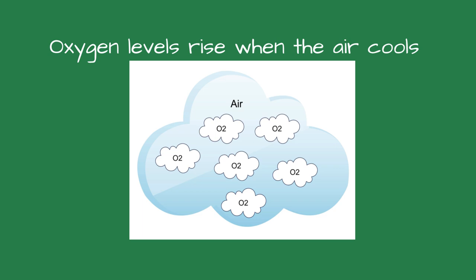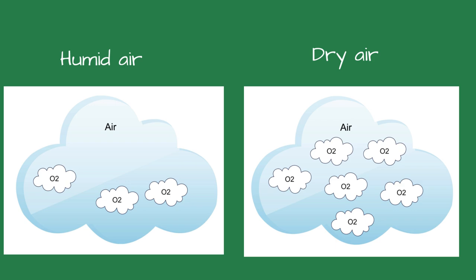If you remember from high school science class, cold air is denser than warm air, meaning it has more oxygen. A change in barometric conditions also affects the oxygen levels in the air. For example, if it's raining outside and the humidity is higher, the oxygen levels drop.